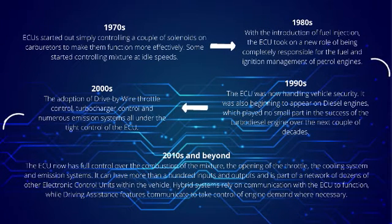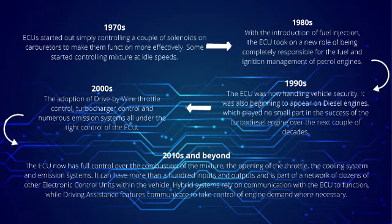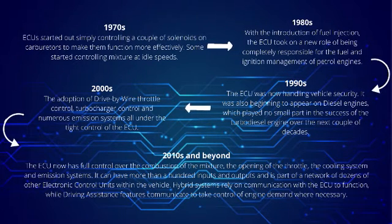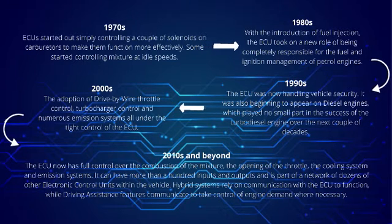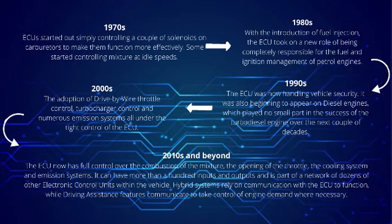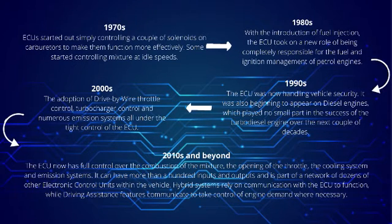Let us have a brief overview of the history of ECUs used for engine control. In the 1970s, ECUs started out simply controlling a couple of solenoids on carburetors to make them function more effectively, and some started controlling mixture at idle speeds. In the 1980s, with the introduction of fuel injection, the ECU took on a new role of being completely responsible for the fuel and ignition management of petrol engines. In the 1990s, ECUs were now handling vehicle security, and also beginning to appear on diesel engines, which played no small part in the success of the turbo diesel engine over the next couple of decades.